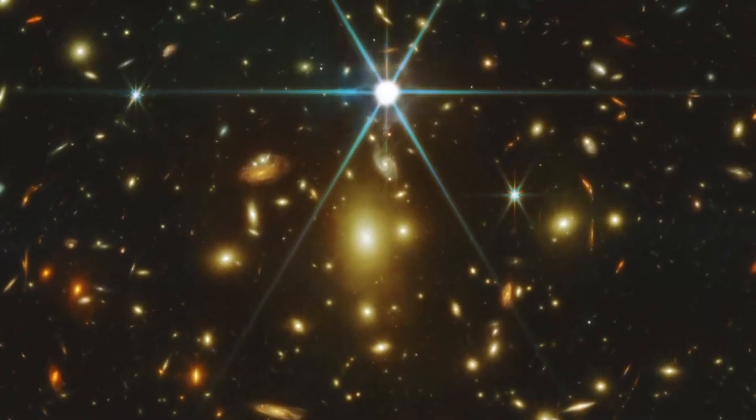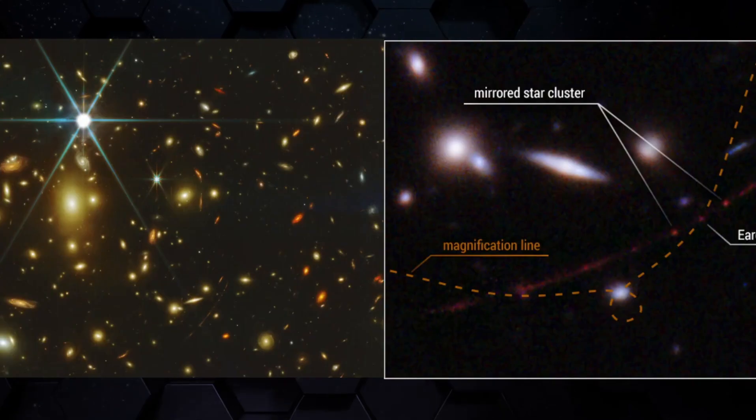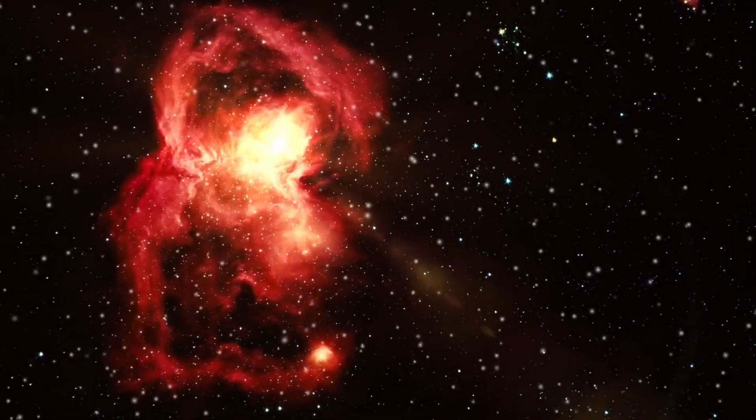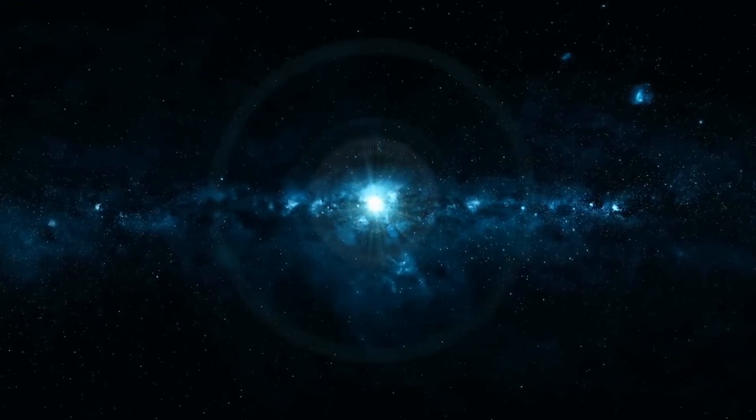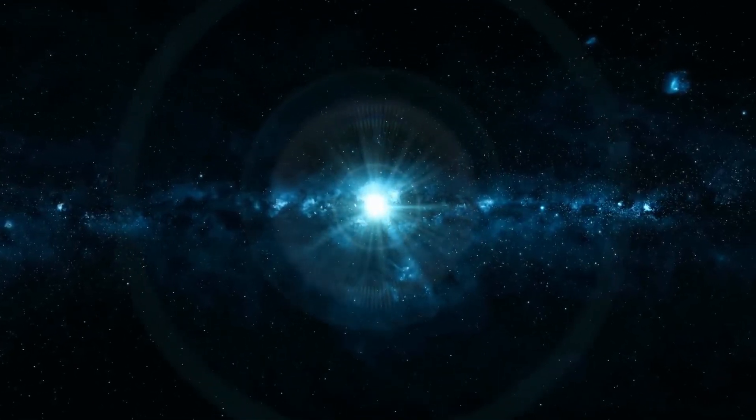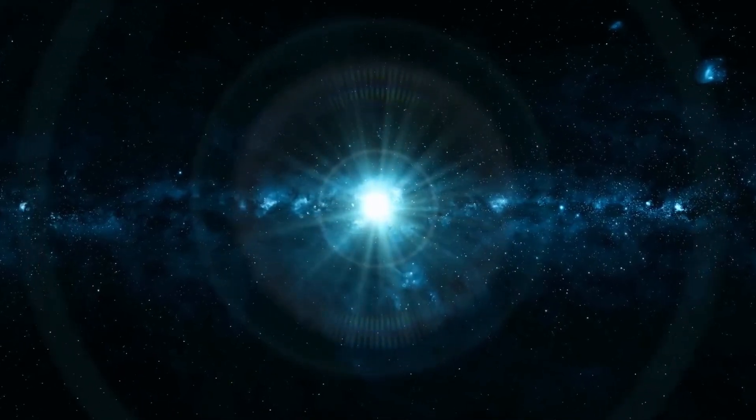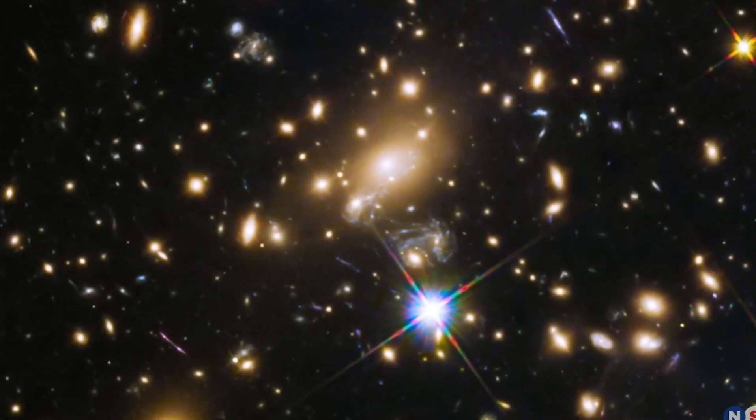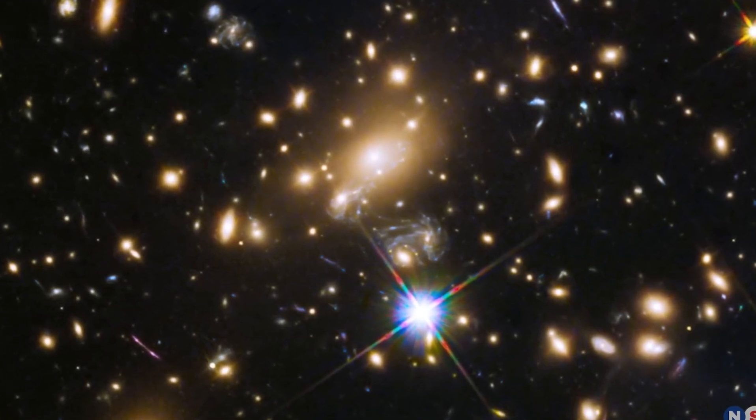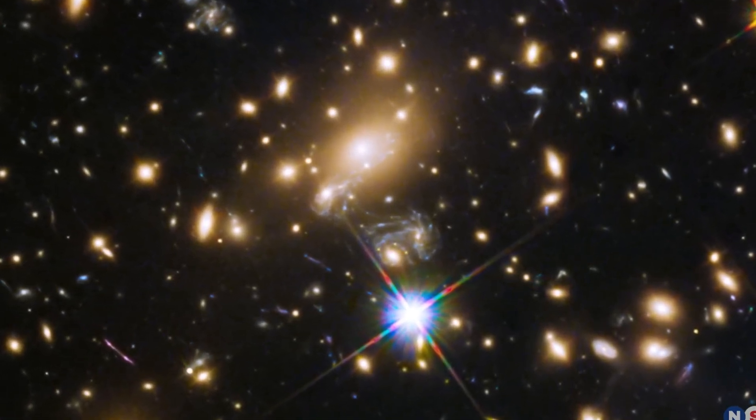The triply-imaged supernova, named Supernova Hope, or SN Hope, opens new avenues for studying the Hubble expansion rate, H0, with unprecedented precision. By leveraging gravitational lensing and time delays of transient events, such as Type 1a supernovae, astronomers hope to unravel the mysteries of the universe's expansion.